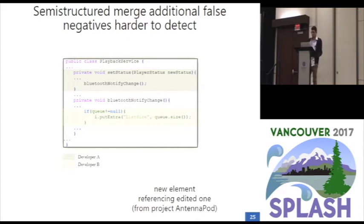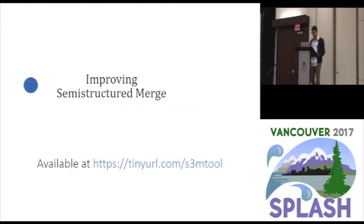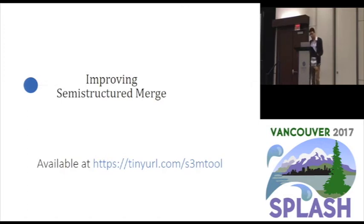For instance, the developer responsible for the set-status method might not be expecting the extra notification added in green into the Bluetooth Notify Change method referenced by the first developer, which will probably impact program behavior. This evidence we found will hardly convince users to adopt Semi-Structured Merge, because of the risk of loss in some scenarios and the extra complexity of the false negatives. Even so, our experiment shed light on requirements for improved merge tools, and we developed an improved Semi-Structured Merge tool, available at this link, to reduce the original Semi-Structured Merge false positives and false negatives.